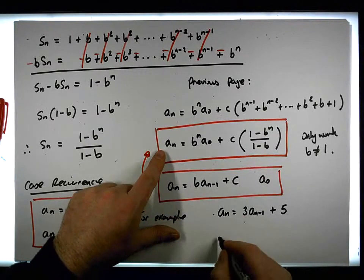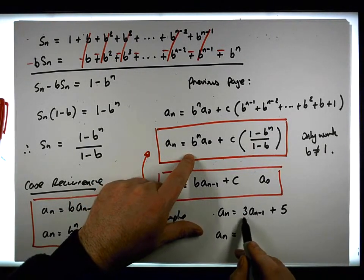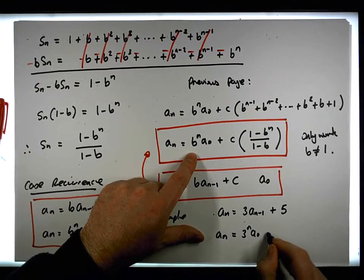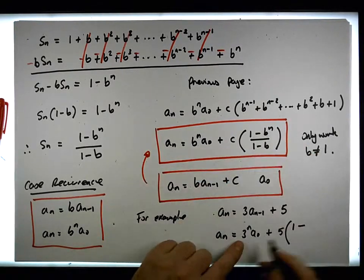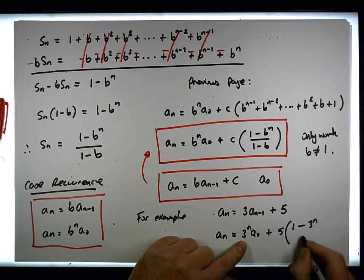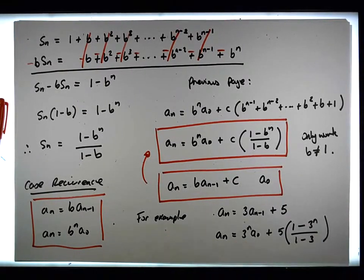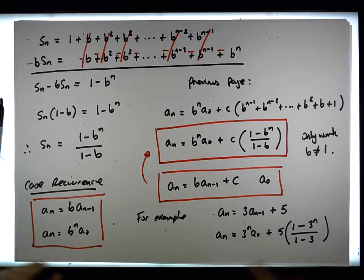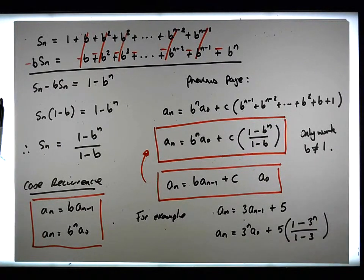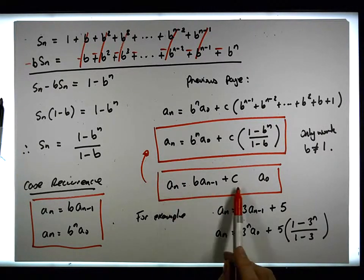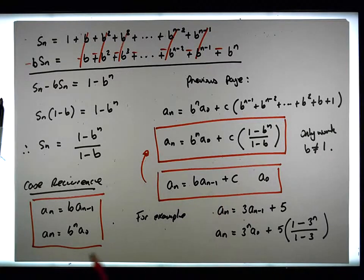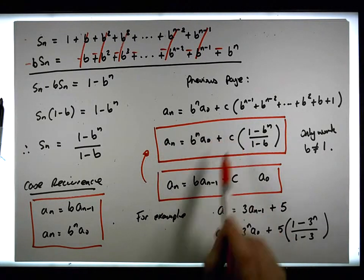...its closed-form solution is a_n equals three to the n times a zero, plus five times one minus three to the n, all over one minus three. You could simplify that to something neater. The main point is that in this video we've solved the linear degree-one heterogeneous recurrence relation and found a closed-form solution for it.